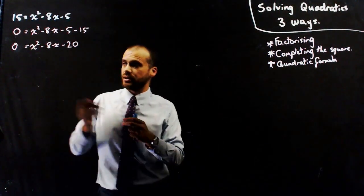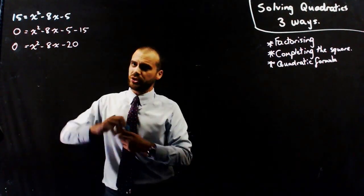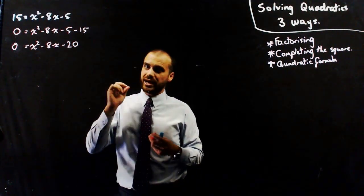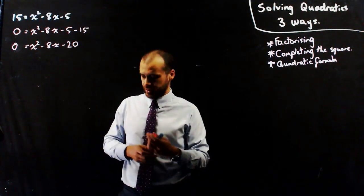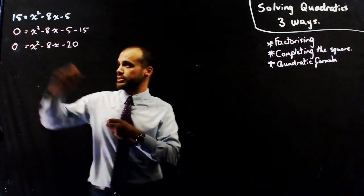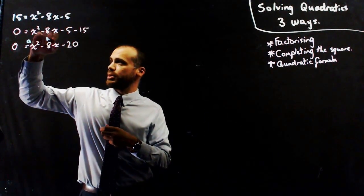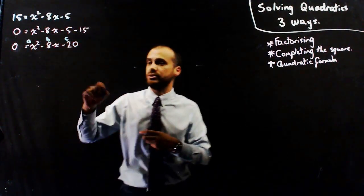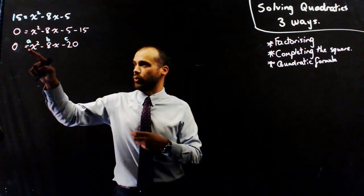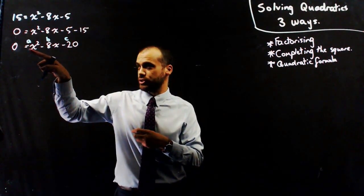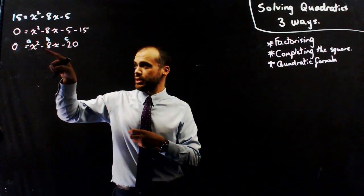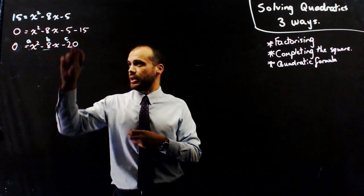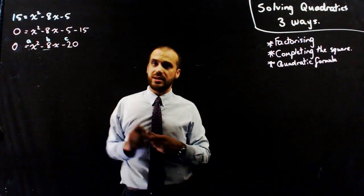I'm going to show you the longer way to do this. You use something called the AC method. This is my A value, this is my B value, and this is my C value. So A is 1 in this case — the coefficient there. B is negative 8, and C is negative 20.